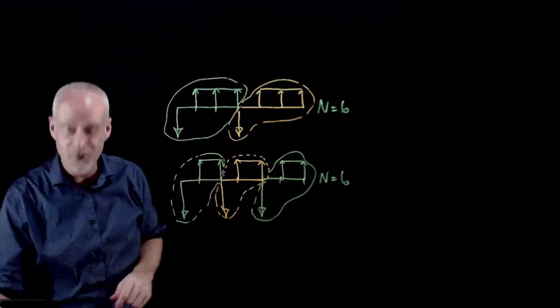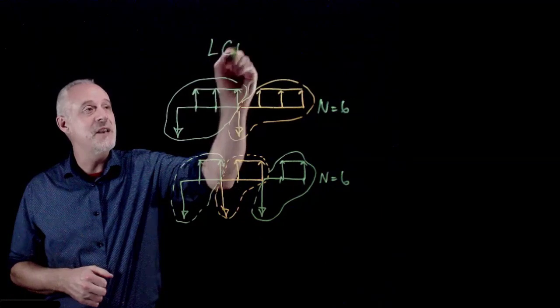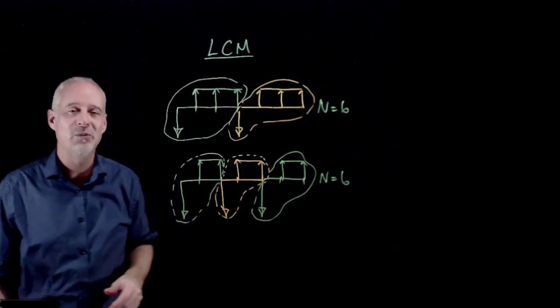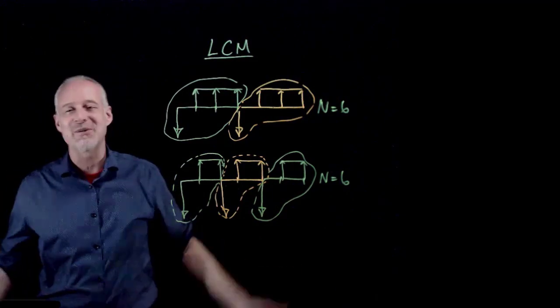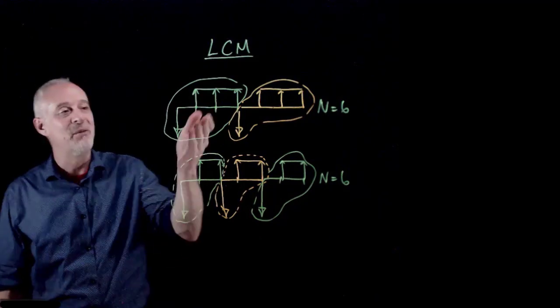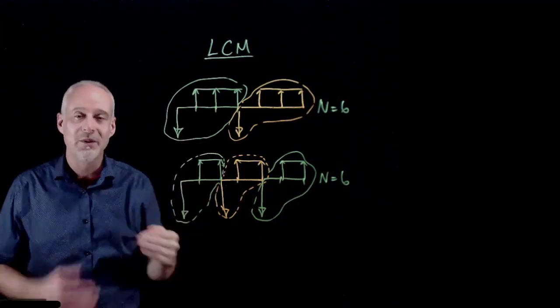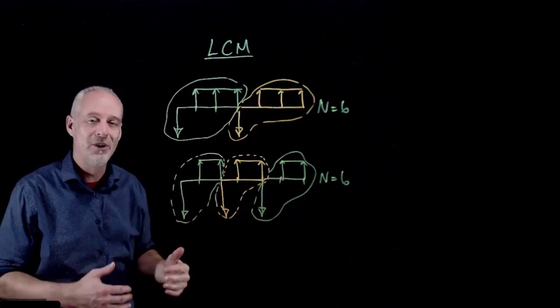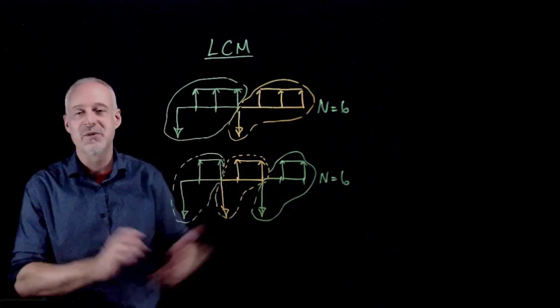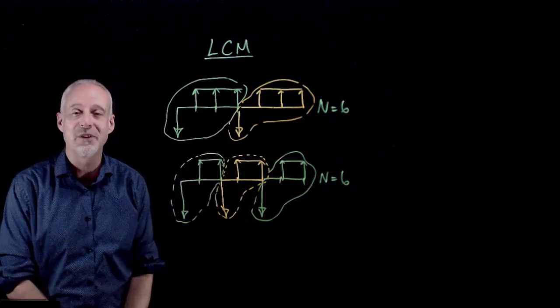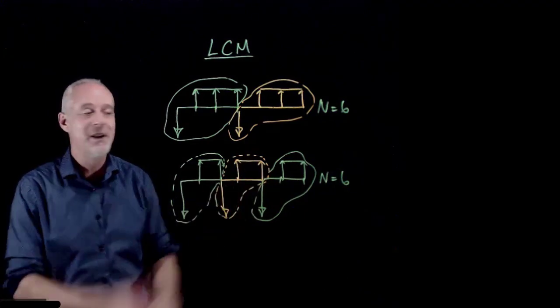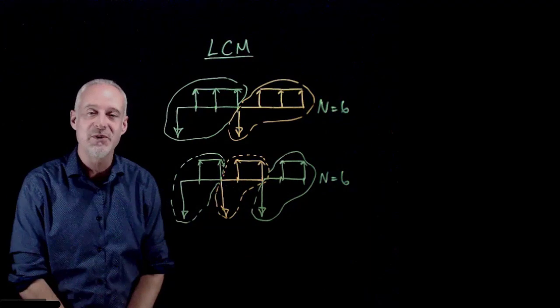Now, least common multiple, so LCM, maybe this takes you back to I think it's probably grade six math or something. It's been a while for me. But if I have the number three and I have the number two, what is the least common multiple of two and three? Well, it's six. And the way that I constructed those diagrams was illustrative of how we arrived at finally an n equal to six as a fair comparison between these two investments.